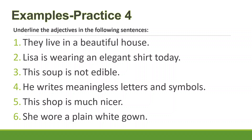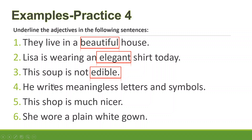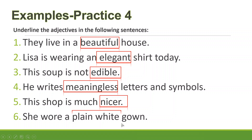The answers: number one — 'They live in a beautiful house' — adjective: beautiful. Number two — 'Lisa is wearing an elegant shirt today' — adjective: elegant. Number three — 'This soup is not edible' — adjective: edible. Number four — 'He writes meaningless letters and symbols' — adjective: meaningless. Number five — 'This shop is much nicer' — adjective: nicer. Number six — 'She wore a plain white gown' — adjectives: plain and white.